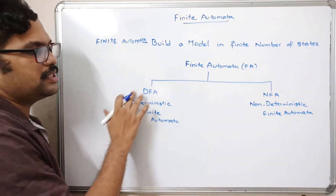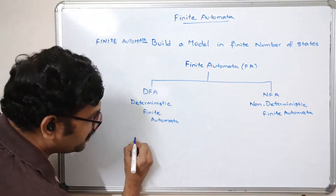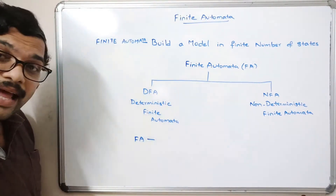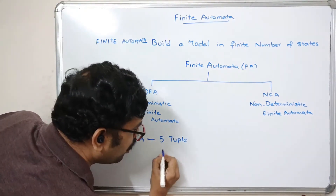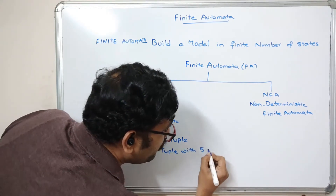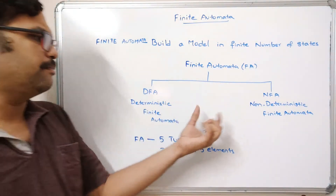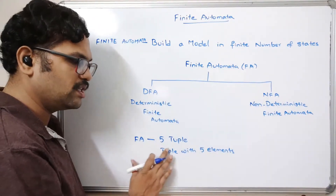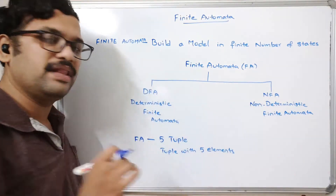Now we'll see the definitions for DFA and NFA. The finite automata — by default it will be the DFA — is defined as a five-tuple, that is a tuple with five elements. Both DFA and NFA definitions are the same; both are represented using a tuple with five elements. There is a slight difference between NFA and DFA, and that is on the transitions.